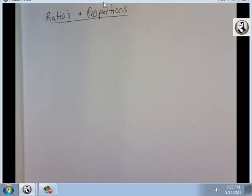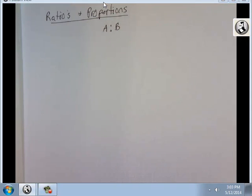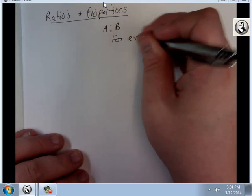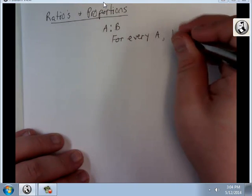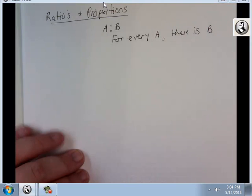All these things are just relationships dealing with numbers. So we can say that two things are related like that. And this is a ratio. A is related to B. So I could say for every A, there is B.